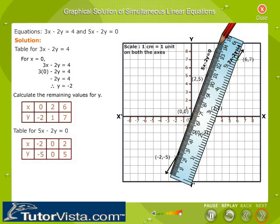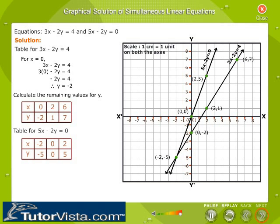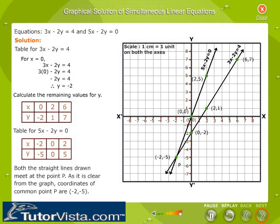This is the required line of the equation 5x - 2y. Can you see that both the straight lines drawn meet at the point P? As it is clear from the graph, coordinates of common point P are